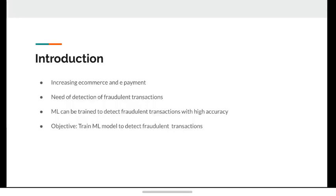E-commerce has been a booming industry due to its popularity and convenience, and e-payments is the main method used in this e-commerce platform. However, e-payments can be compromised and may be used by people other than the owner. So there is a need for detection of fraudulent transactions. With the rise of AI, ML can be trained to detect fraudulent transactions with high accuracy.